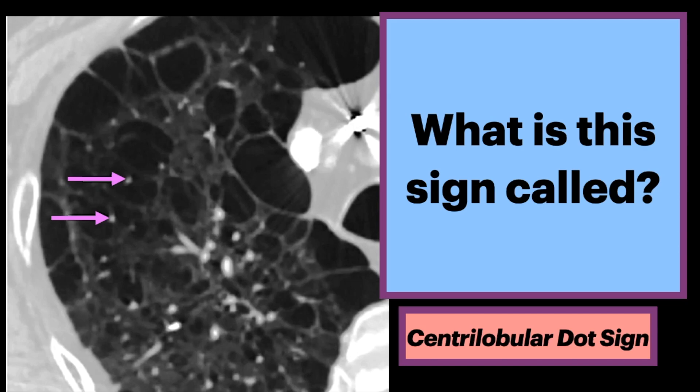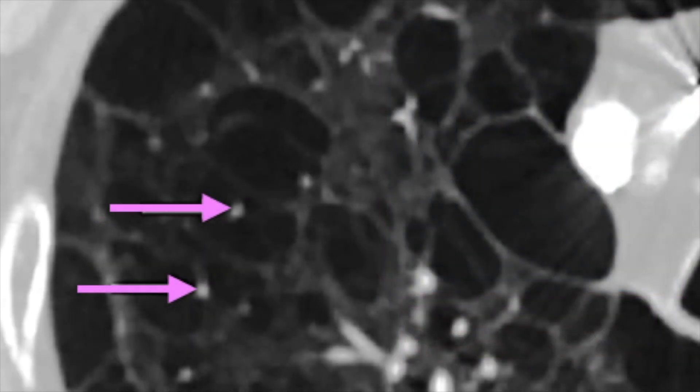What is this sign called? This axial CT shows numerous cystic areas within the lung. The arrows point to hyperdense foci in the center of each cystic area.